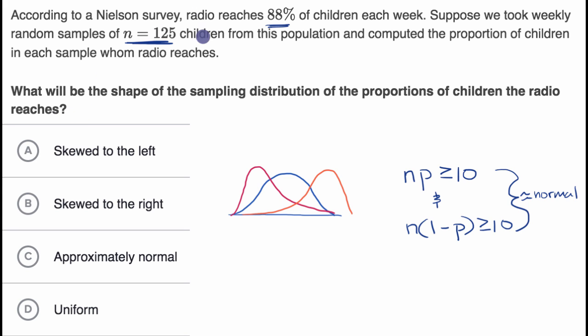Well, let's just figure out what n and p are. Our sample size here, n is equal to 125, and our population proportion of children that are reached each week by radio is 88%. So p is 0.88.